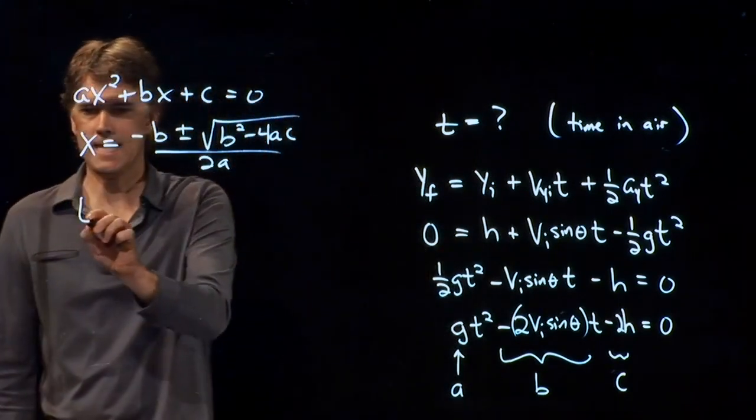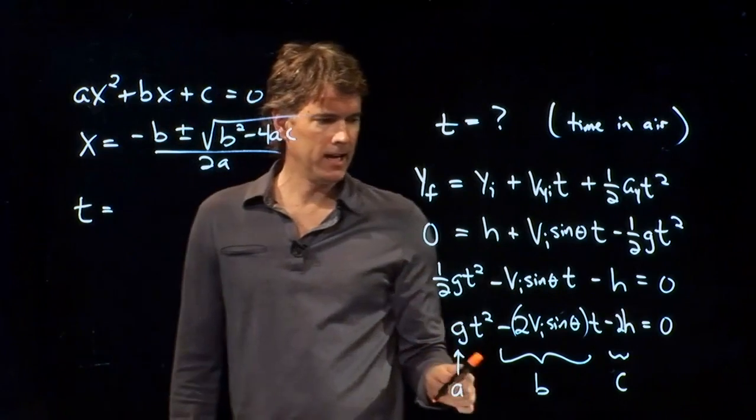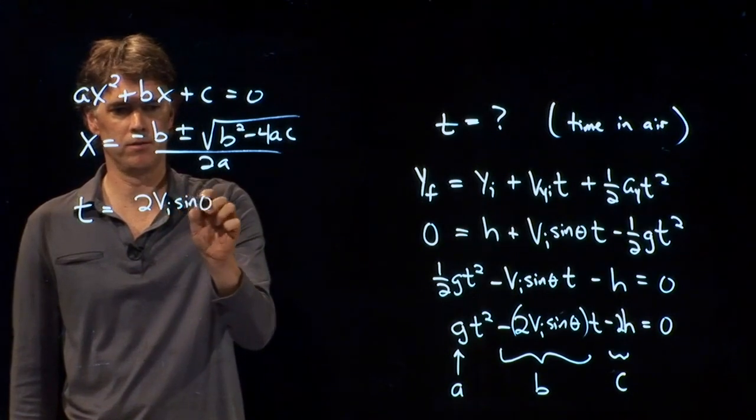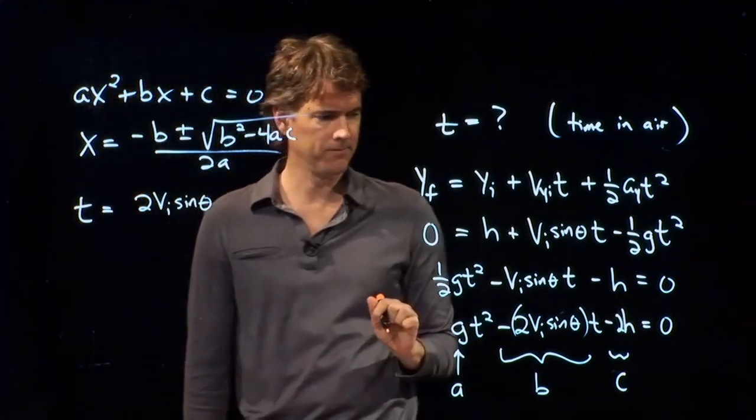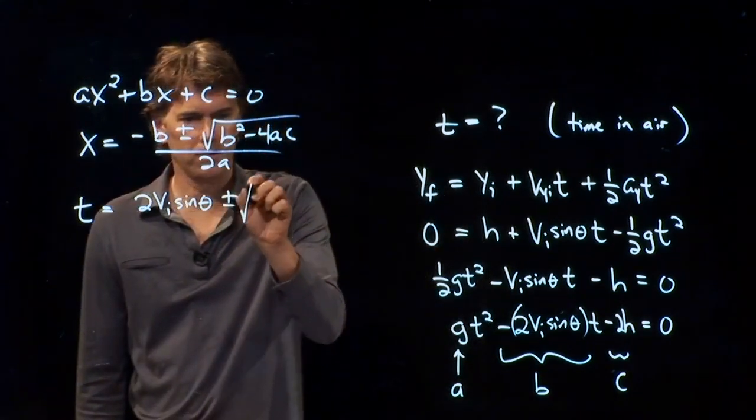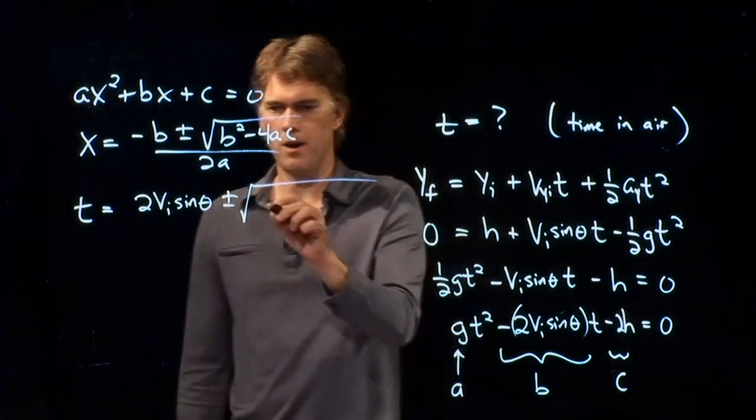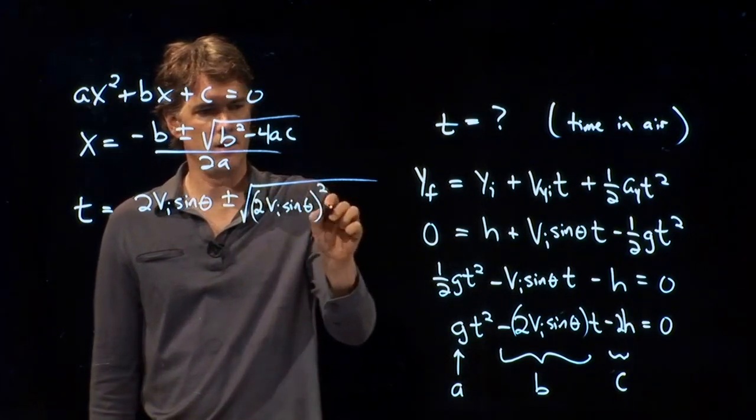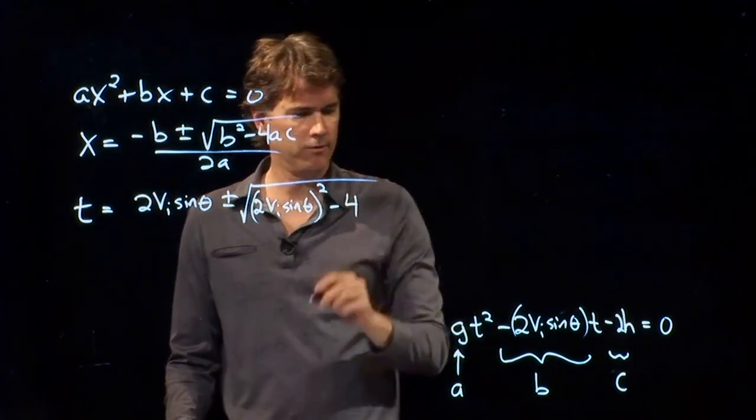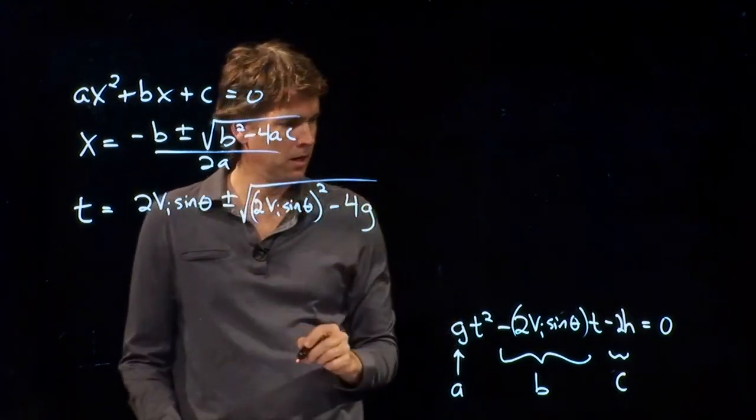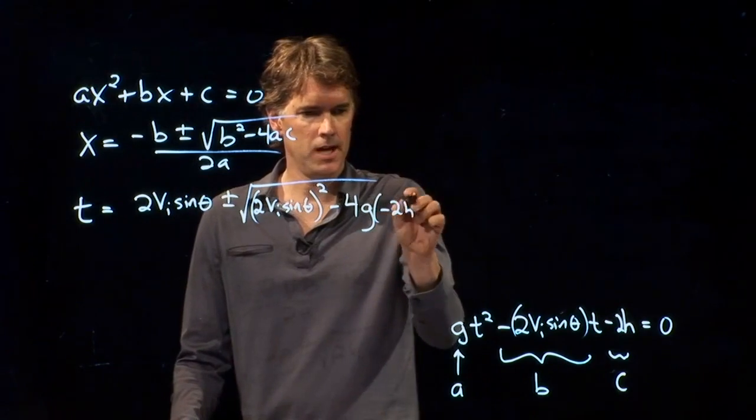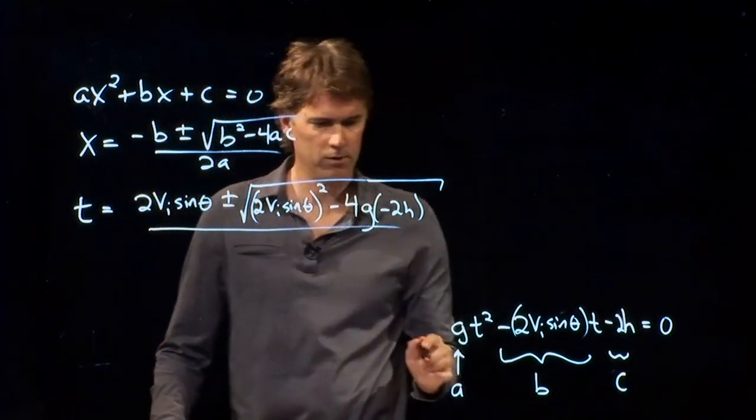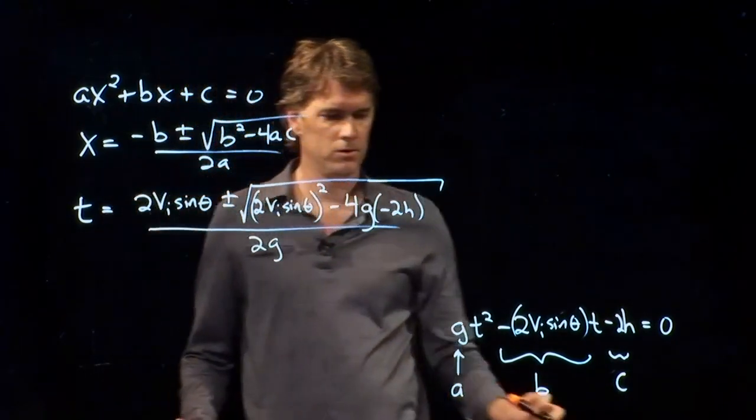It is negative B plus minus the square root B squared minus 4AC all over 2A. So in our case, this is A, this is B, and this is C.